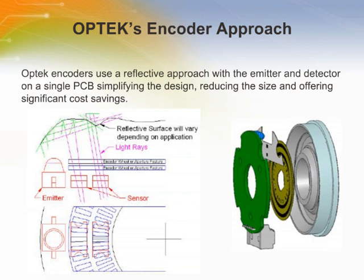Optic encoders use a reflective approach with the emitter and detector on a single PCB, thus simplifying the design, reducing the size and offering significant cost savings. The reflective surface will vary depending on different applications. By placing a reticle with a certain aperture size in front of the photo sensor, it is able to improve encoder resolution.